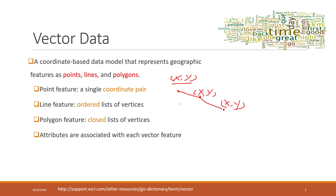A polygon is a closed list of vectors — it is still a list of points, but the difference is that the first point and the last point are the same point, making it a closed list. For example, we can have four points each with x and y coordinates. A polygon might represent a piece of land, and the attributes could include the area of the polygon and the owner of that land.